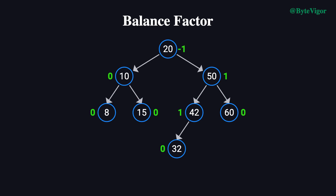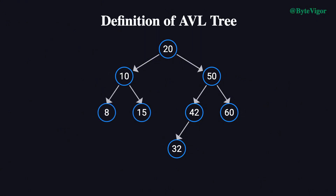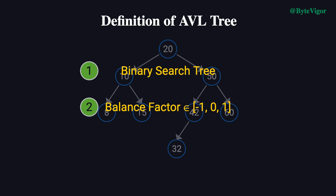Let's look at a specific example. In this binary search tree, I've marked each node's balance factor in green. You can clearly see that all balance factors fall within the range of -1, 0, and 1, so this tree satisfies the AVL tree's balance requirements. However, if we remove the two leftmost leaf nodes, 8 and 15, the tree will still technically be a binary search tree, but it will no longer satisfy AVL conditions. At this point, the root node's left subtree height is one, while the right subtree height is three, resulting in a balance factor of -2. Since the balance factor exceeds one, the tree becomes unbalanced. The key takeaway is that an AVL tree must ensure the balance factor of each node stays within -1, 0, and 1. If violated, the tree needs rebalancing through rotation operations to restore balance and maintain optimal height.